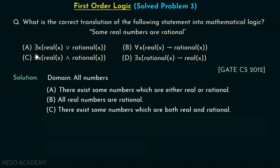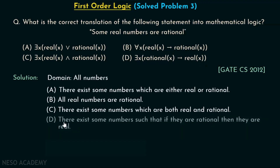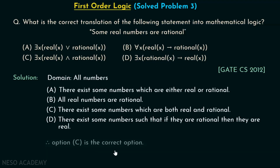Option C is the correct option. Let's see what happens in option D: there exists x, Rational(x) implies Real(x). This is incorrect. We are talking about some numbers such that if they are rational then they are real. Converting P implies Q to not-P or Q, this means there exist some numbers which are not rational or real — obviously not correct. So option C is the correct option.